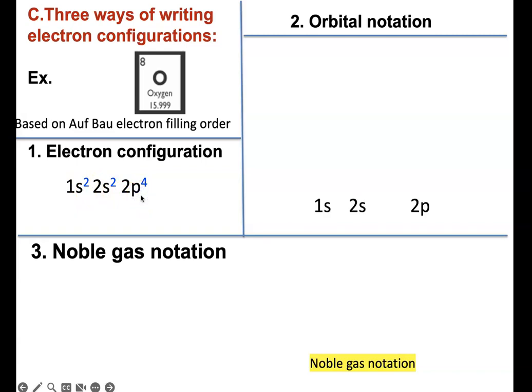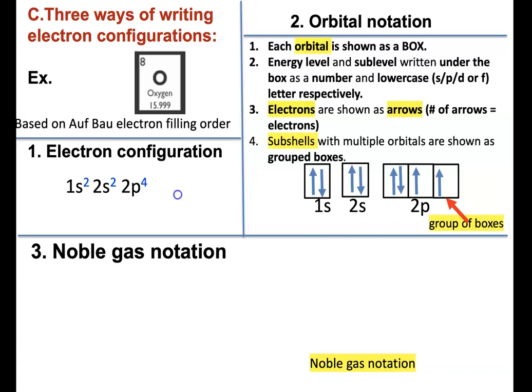Then orbital notation. You write 1s, 2s, 2p. For each orbital, you're going to write a box. For 2p, you're going to join the orbitals together because they are in one subshell. Then you fill the electrons: 1, 2, 3, 4, 5, 6, 7, 8. Orbitals are shown as boxes. Energy level and sublevel are written under the box as a number and a lowercase letter. Electrons are shown by arrows. If you have 2 arrows in one box, they are opposite orientations. Subshells with multiple orbitals are shown as grouped boxes.